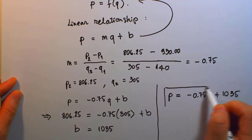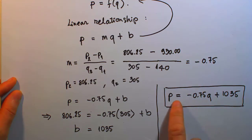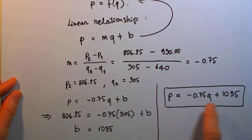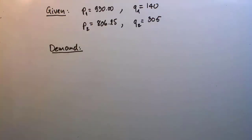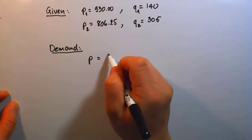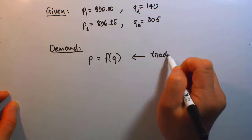Let me emphasize: we arrived at this linear demand function based on the tradition where we put price as the dependent variable and Q as the independent variable. In other words, price is the function and Q is the independent variable. Writing price as a function depending on quantity Q — that's the tradition.